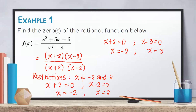The definition of zero of a rational function requires that the value makes the numerator equal to zero. However, x = -2 is also a restriction of the denominator, so it is not a zero of the rational function. Therefore, the zero of the given rational function is x = 3.